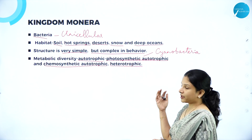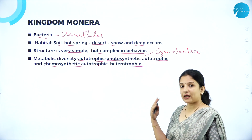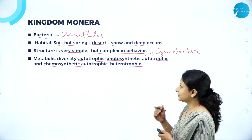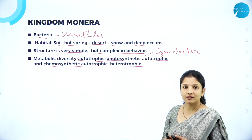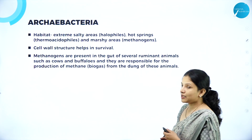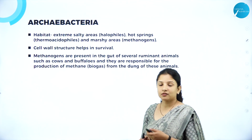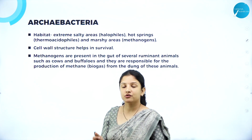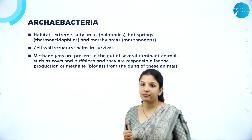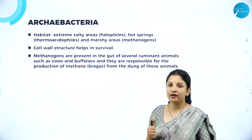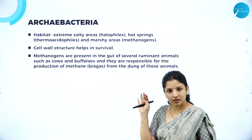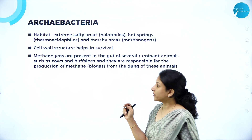So therefore, they can be pathogenic or parasitic as well. This is about the general characteristics of Kingdom Monera. Kingdom Monera is again divided into two classes — that is Archibacteria and Eubacteria. We will study about these two separately.